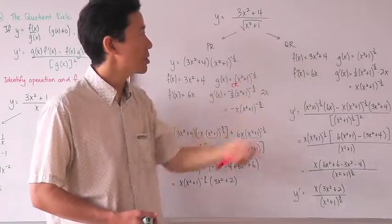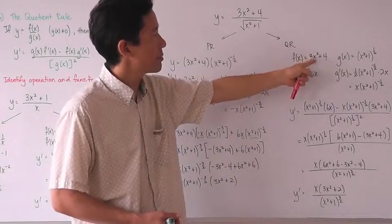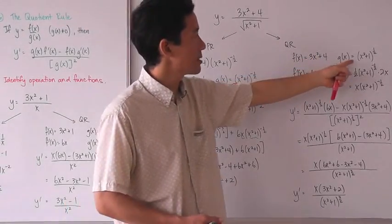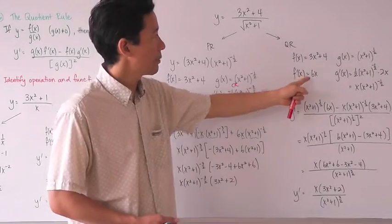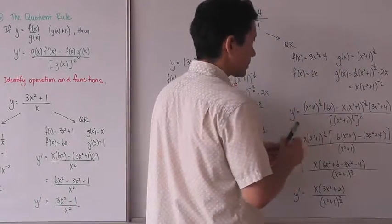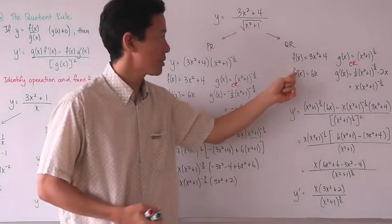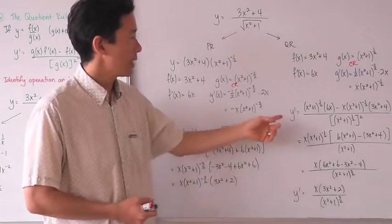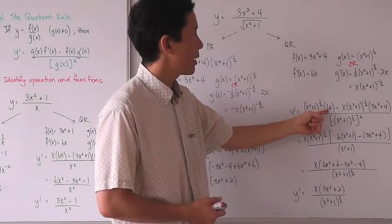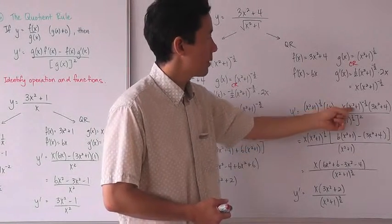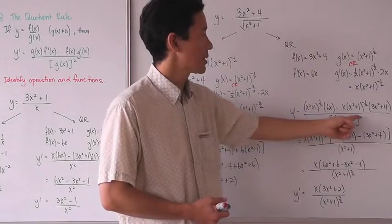Now let's use the quotient rule directly. We have f of x equal to 3x squared plus 4, and g of x is going to be x squared plus 1 to the one half, since it's in the denominator. We use the chain rule to find the derivative of g of x, and simple rules to find f prime of x. Then y prime equals g of x times f prime of x minus f prime of x times g prime of x, all divided by g of x quantity squared.